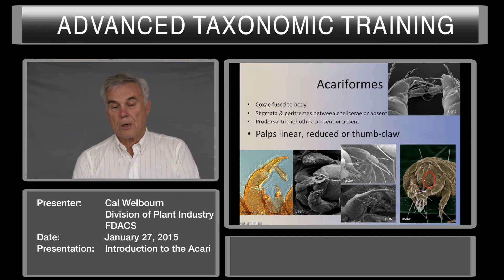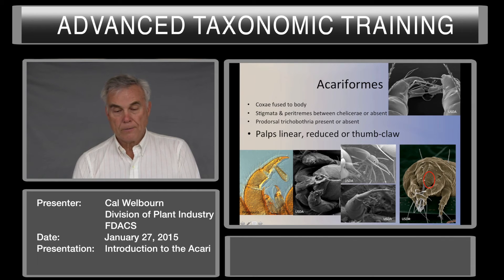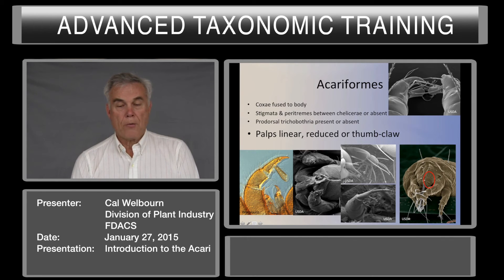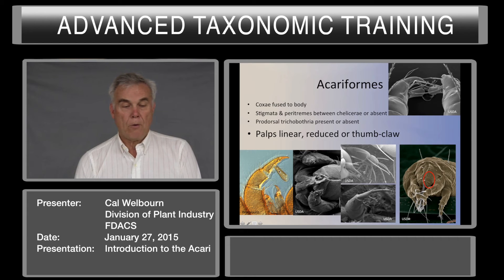The palps are linear, reduced, or thumb claw. In some groups, the palps are linear. In other groups, they have what we call thumb claw — this is a claw-like structure on the palp tibia, and the palp tarsus may be reduced or moved so it's more lateral than terminal.